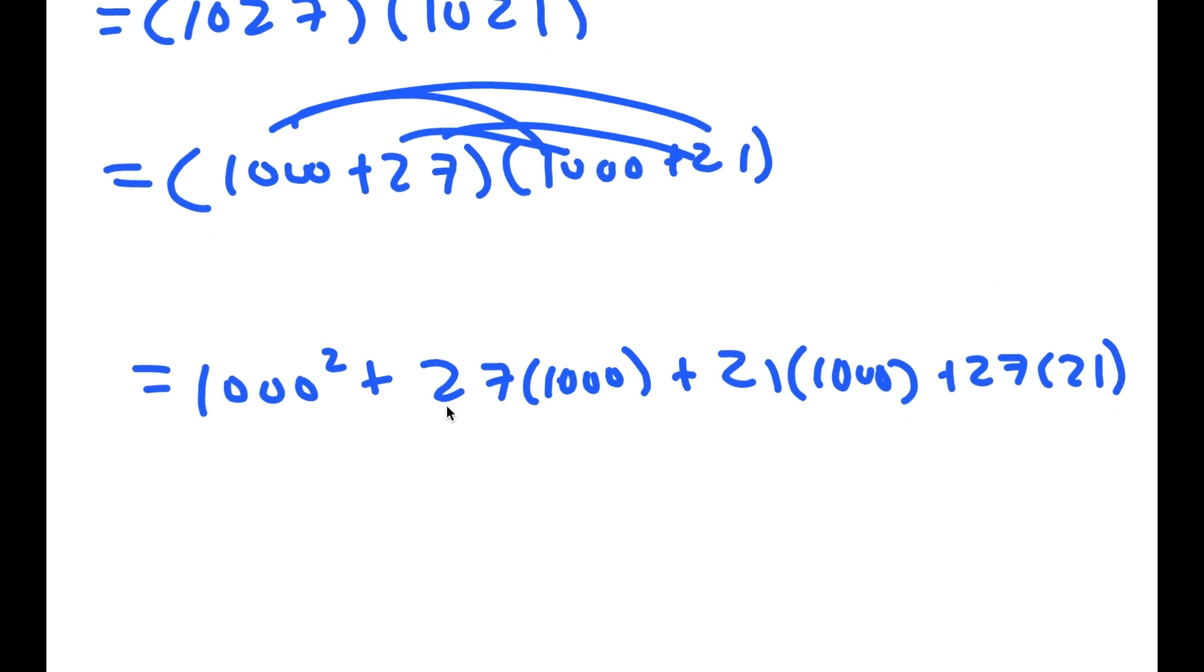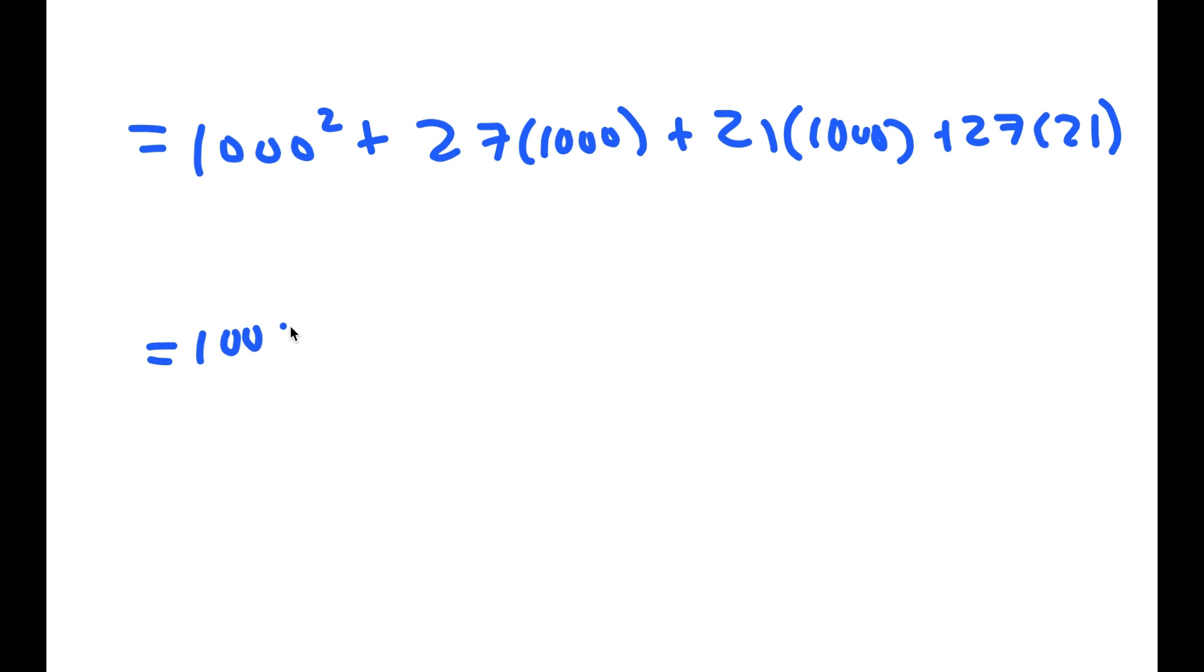So now I get 1,000,000 plus 27,000 plus 21,000 plus 567.